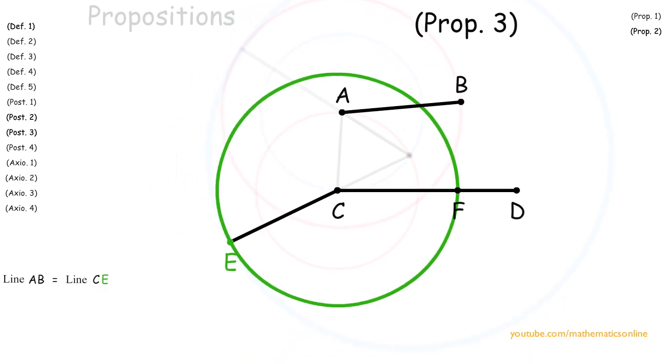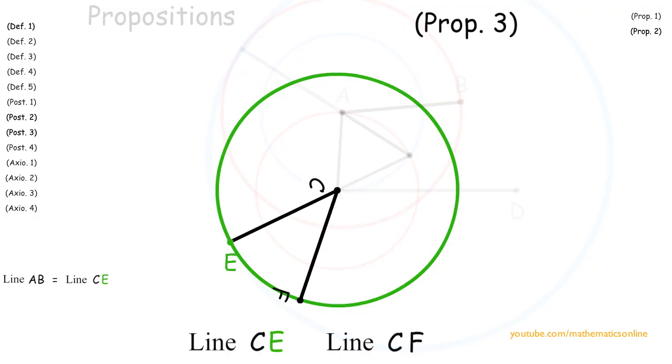So first looking at circle CE, we see that line CE is the radius, and line CF is also the radius, and so they are equal.